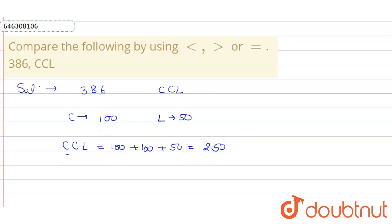So if I compare them, that is, one number is 386 and one is 250. So I know that 386 is bigger. So my answer is 386 is bigger than 250.